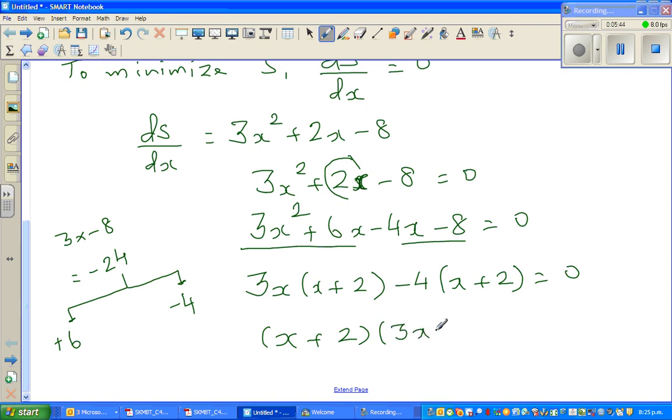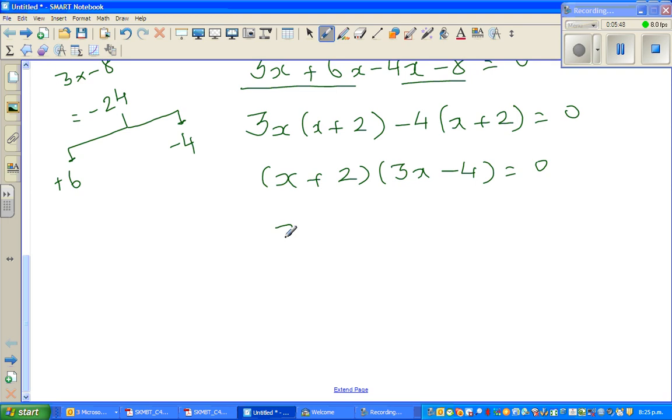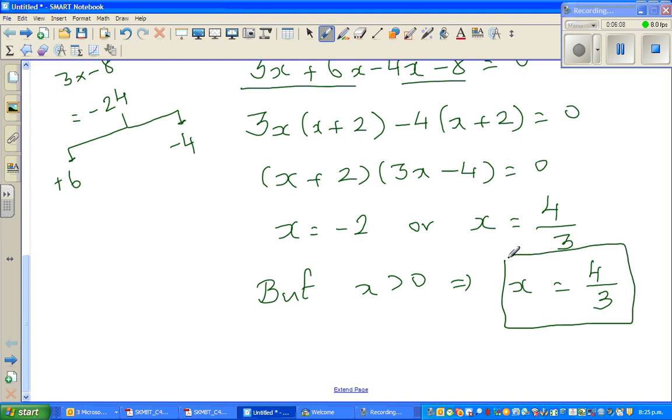So I can say x is equal to negative 2 or x is equal to 4 over 3. But x is greater than 0, which implies x is equal to 4/3.